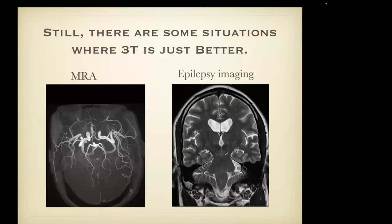There are some situations where 3T is just better. The two examples that come to mind are MRA — we get exquisite MRA scans at 3T, so if there's ever a question about whether a patient could have an aneurysm, by all means do it at 3T — and any time you're looking for high detail, particularly epilepsy imaging where you're trying to resolve the structure within the hippocampal formation on coronal T2-weighted scans. There are pros and cons to imaging at both field strengths, but you need to be aware of these to optimize imaging for your patient.